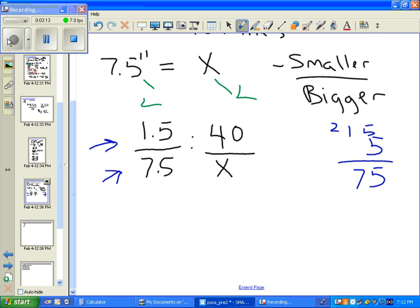So we can just say that this X will be equal to 200. And X equals 200. And that's the distance between the two cities, 200 miles. And that would be answer letter C on your answer form. Answer letter C.